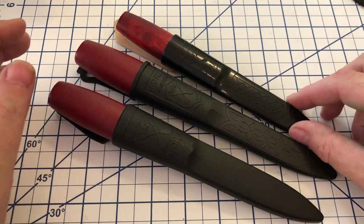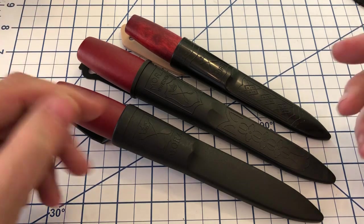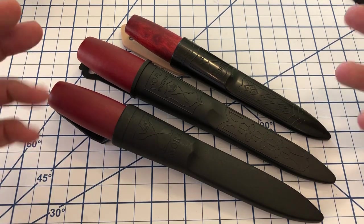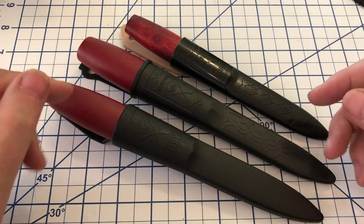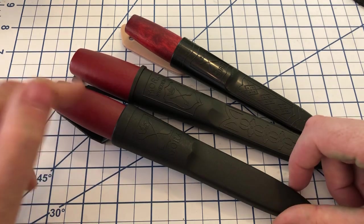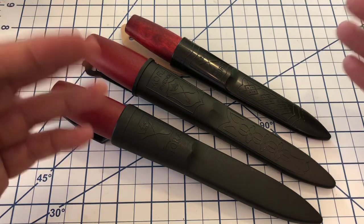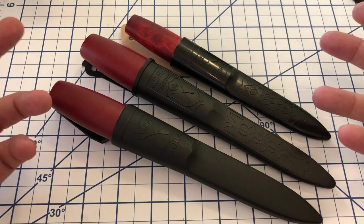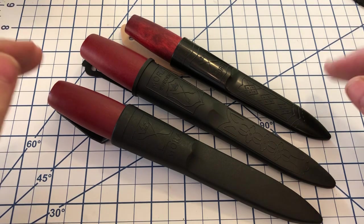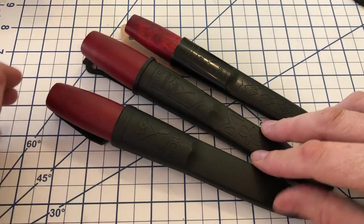They started then using curly birch, which is a little more attractive, got some cool grain to it. But that quickly became more expensive because it's much harder to find. And so they then started going back to birch, and that's when they started staining, originally staining the handles red to make them look sort of akin to mahogany, is what they were going for. Eventually, they stopped staining and started just painting them red, and that is what these two have.